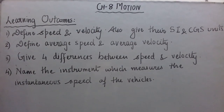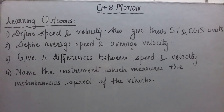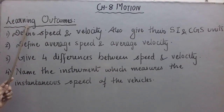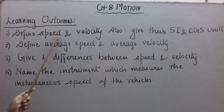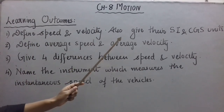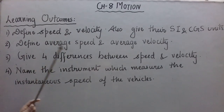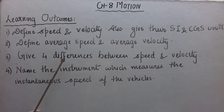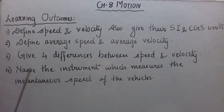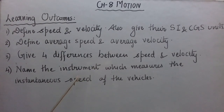Hello students. In this video we are going to study speed and velocity. The learning outcomes are: define speed and velocity and give their SI and CGS units, define average speed and average velocity, give at least four differences between speed and velocity, and name the instrument which measures the instantaneous speed of vehicles fitted in them.